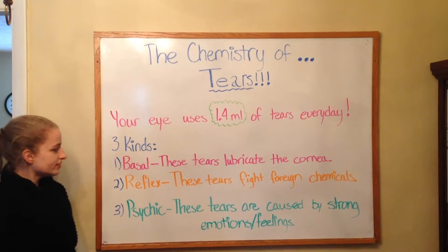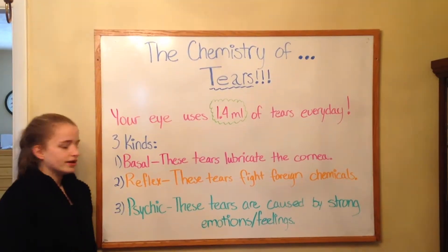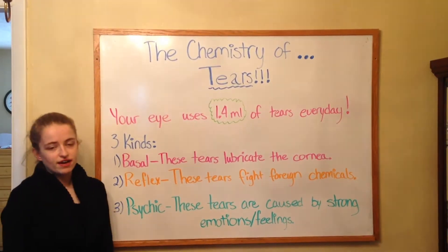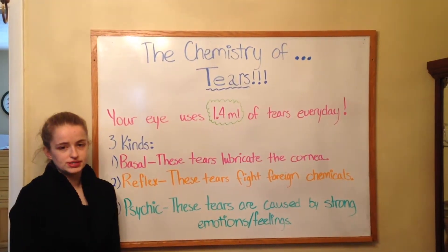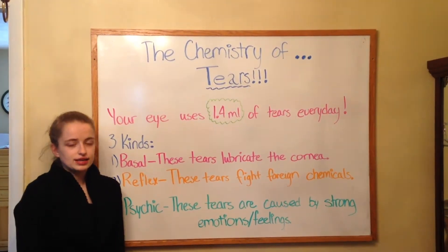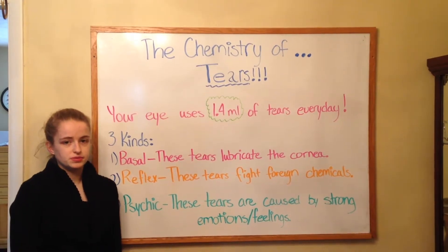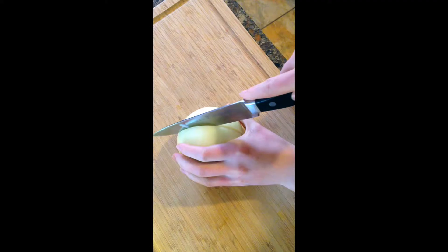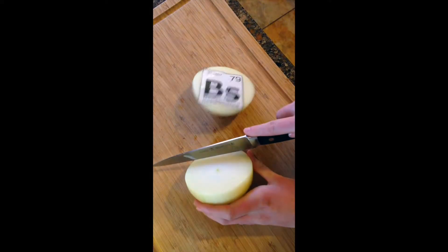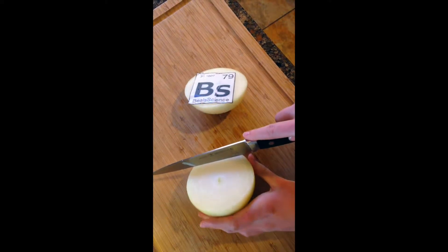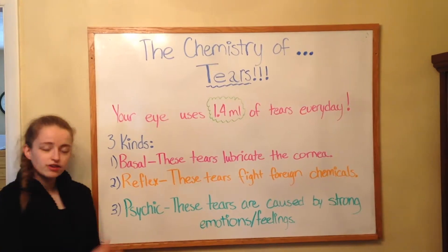The second kind, reflex tears, are used by the eye to fight foreign chemicals — like the chemicals that your eye is exposed to when you cut an onion.